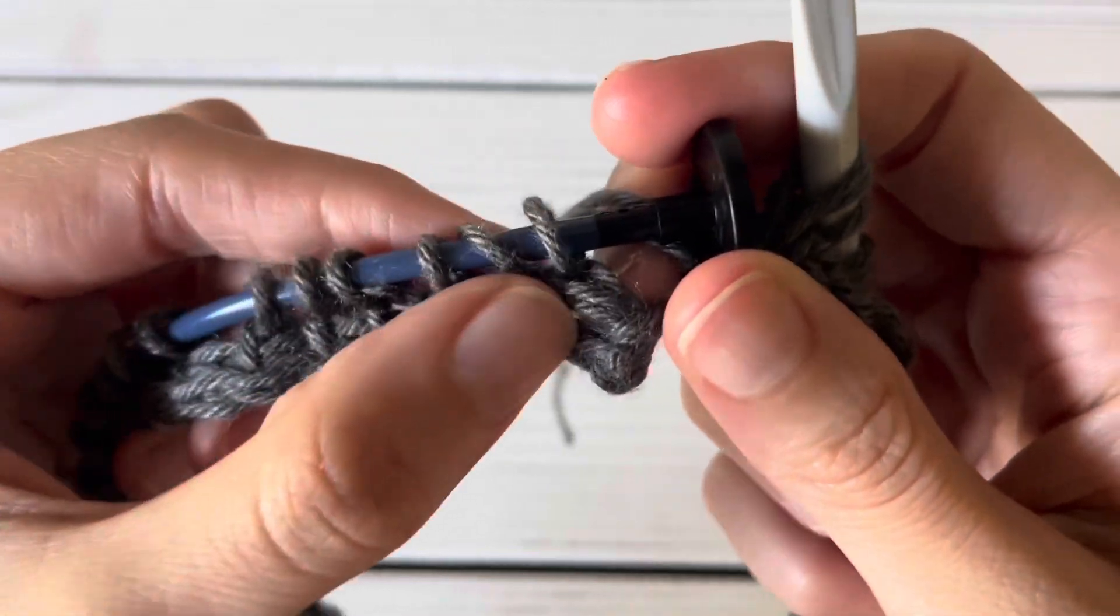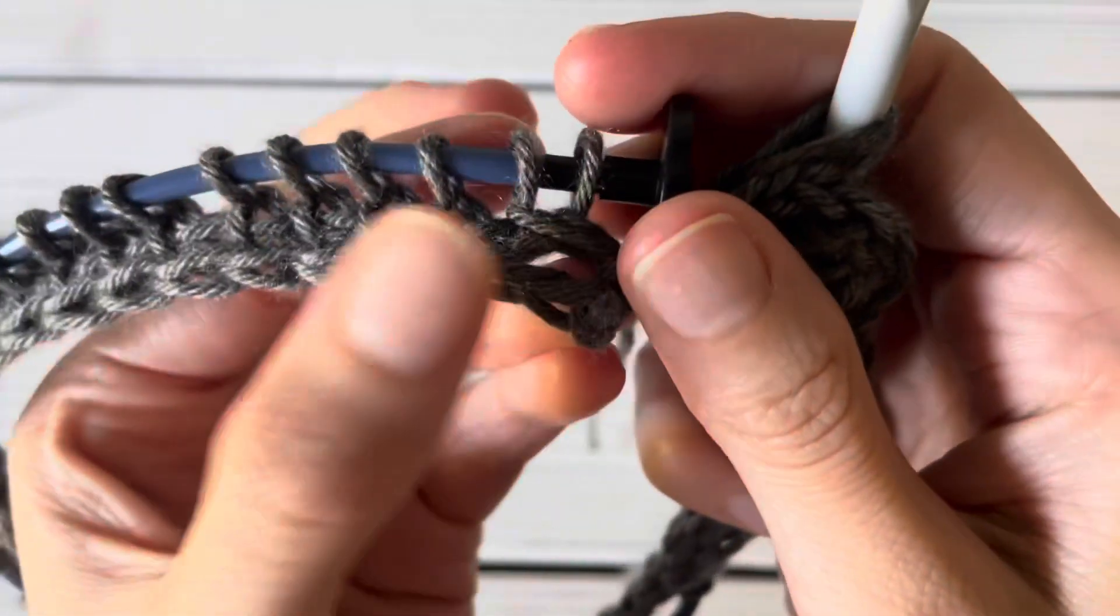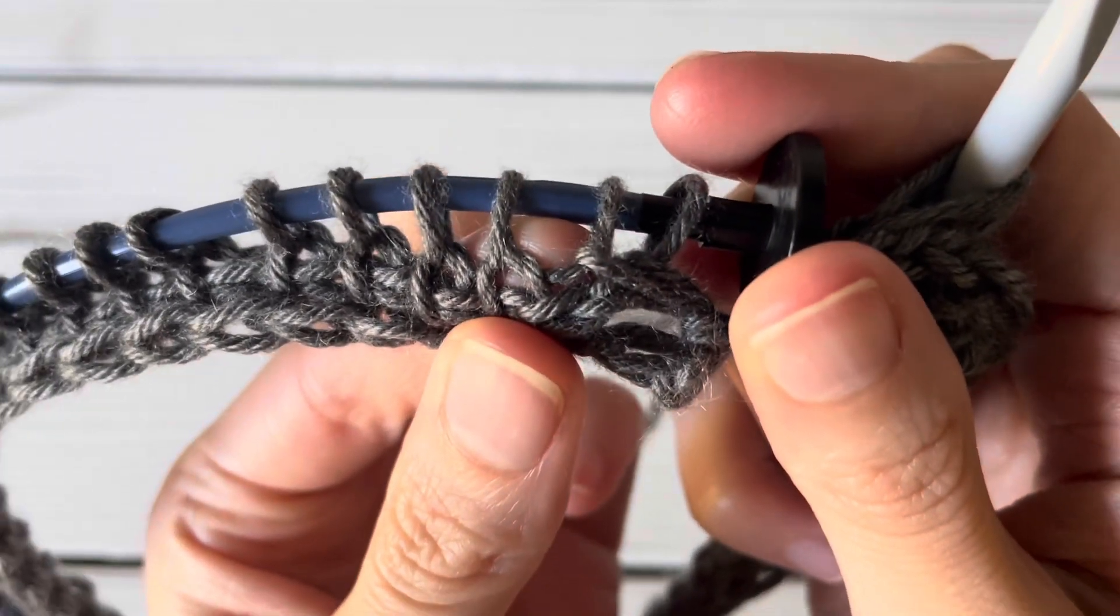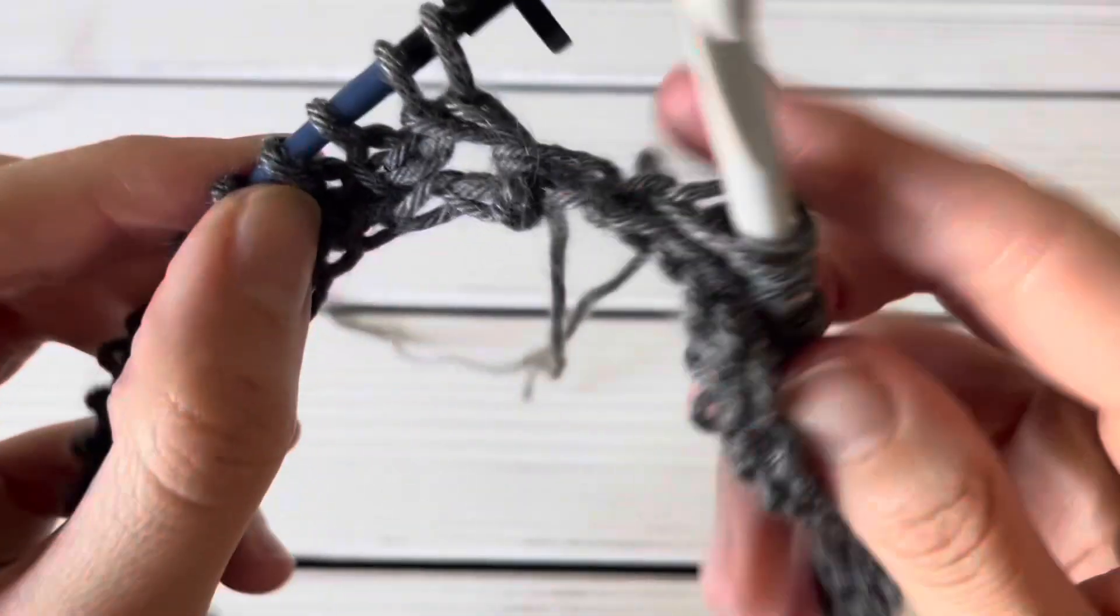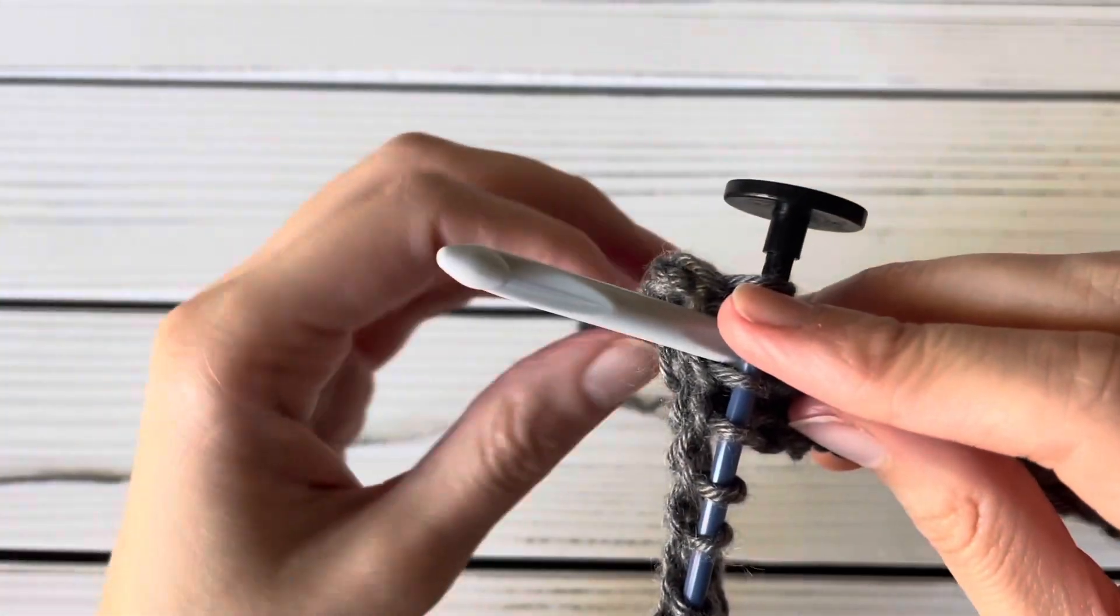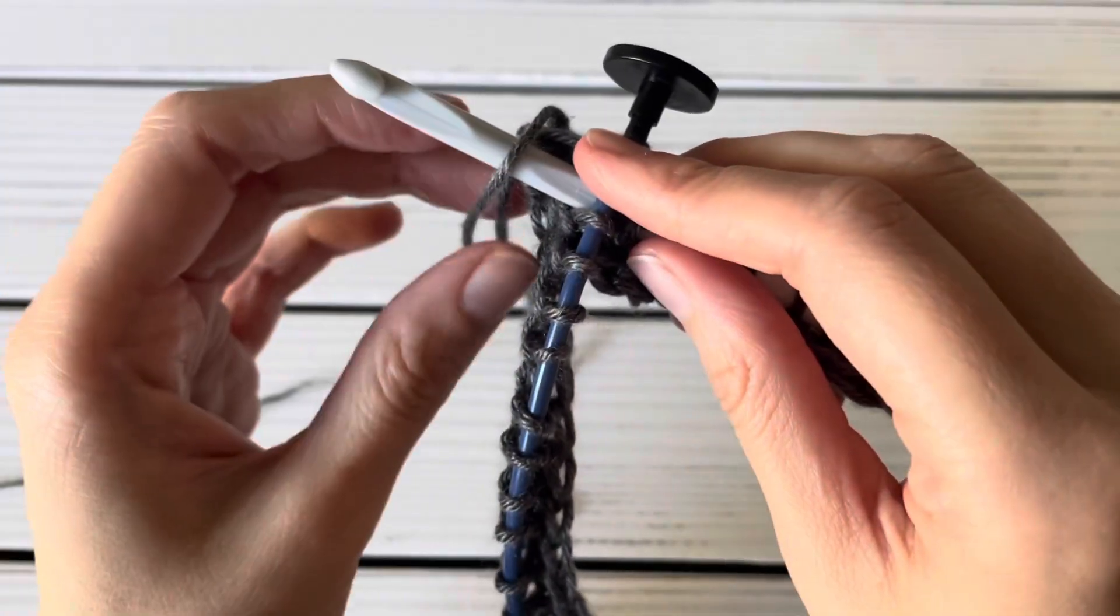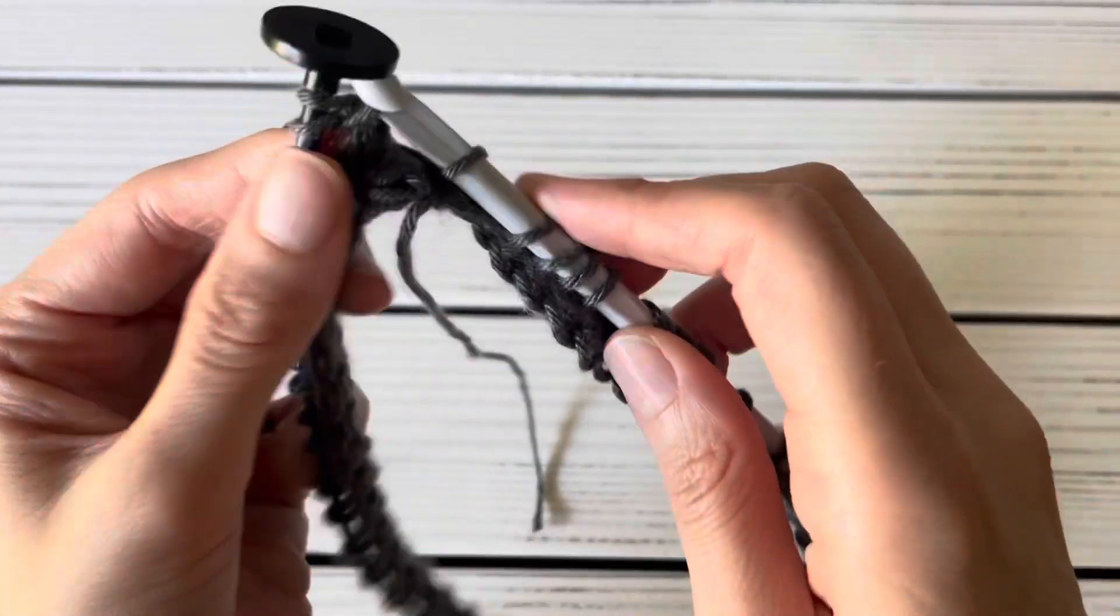Now we need to join this row in the round again by going between the second and third loop on our cable. So insert your hook between those two loops, and then yarn over and pull up a loop.